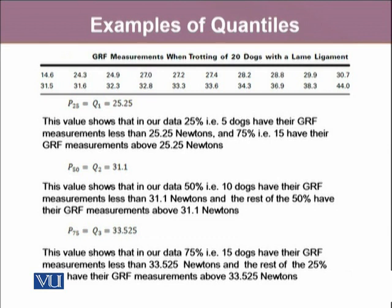Similarly, for the second quartile, which is the 50th percentile, the value turned out to be 31.1. This value shows that in our data, 50 percent, which is 10 dogs out of 20, have their GRF measurements less than 31.1 Newtons, and the rest of the 50 percent have their GRF measurements above 31.1 Newtons.